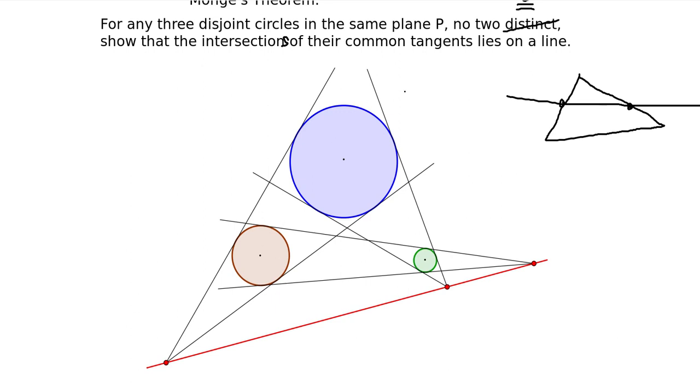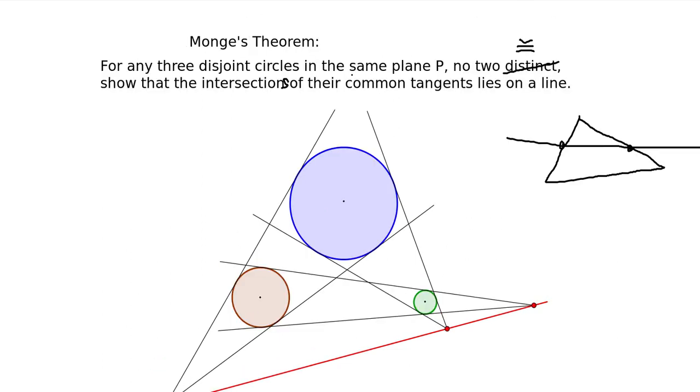But here we're dealing with circles and not really triangles. Now, another way is that, notice we have this specification, which sort of hints to the solution, is that they're in the same plane P.